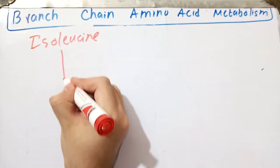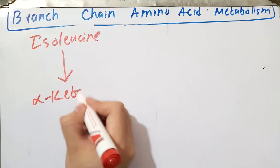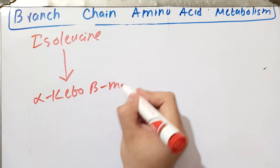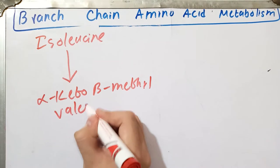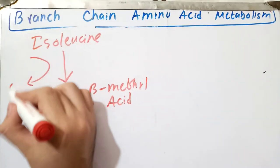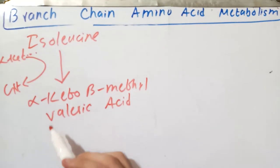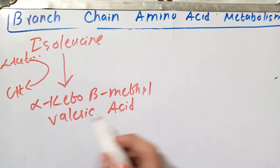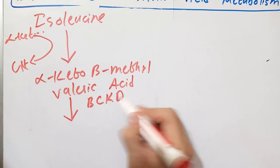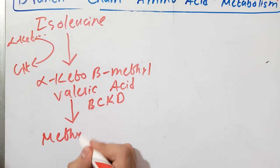Now let's talk about the metabolism of isoleucine. Isoleucine, just like leucine, will undergo a transamination reaction and will be converted into the alpha-keto acid called alpha-keto-beta-methylvaleric acid. This reaction is also accompanied by the formation of glutamate from alpha-ketoglutarate. The alpha-keto-beta-methylvaleric acid will undergo branched-chain alpha-keto acid dehydrogenation, and the resultant compound will be called methyl-butyryl-CoA.